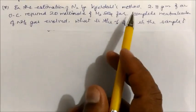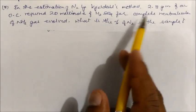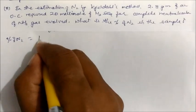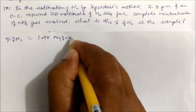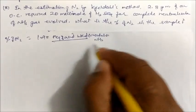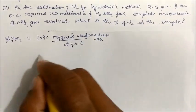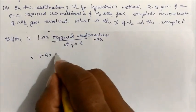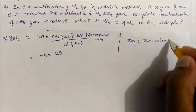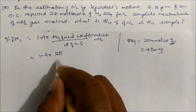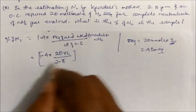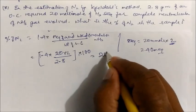Question 6: In the estimation of nitrogen by Kjeldahl method, 2.8 gram of an organic compound required 20 ml of H₂SO₄ for complete neutralization of ammonia gas evolved. The n-factor of H₂SO₄ is 2, so milliequivalents = 20 × 2 = 40. Percentage of nitrogen = 1.4 × 40 ÷ 2.8 × 100. On solving, you get 20%.